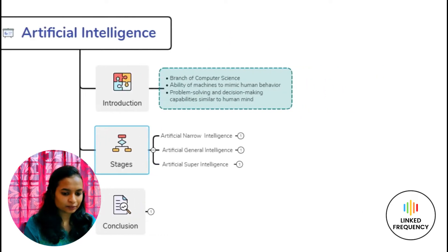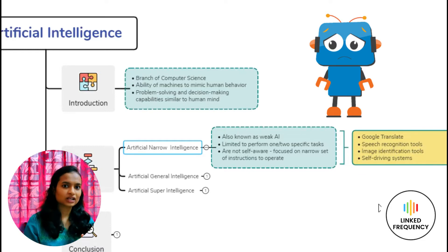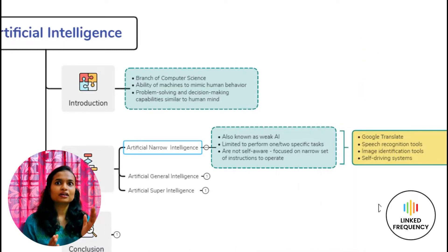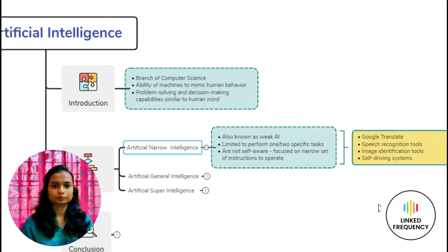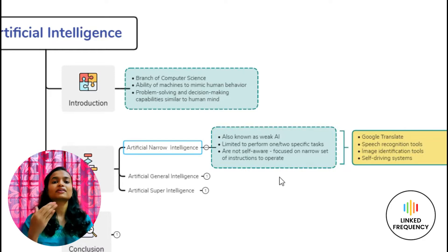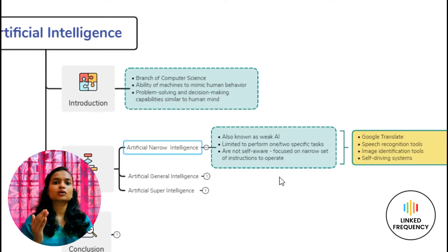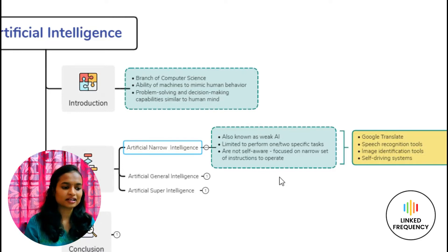Starting with ANI. ANI is also known as Weak AI because it is only capable of doing one or two tasks at a time. It can only do a task which is specifically assigned to it, and it is not very self-aware of what exactly it is doing. For example, if you have assigned a machine to sort based on color, it is going to do only that specific task and nothing apart from that. So it is very much goal-oriented and specific task related, which is what is performed in Artificial Narrow Intelligence.